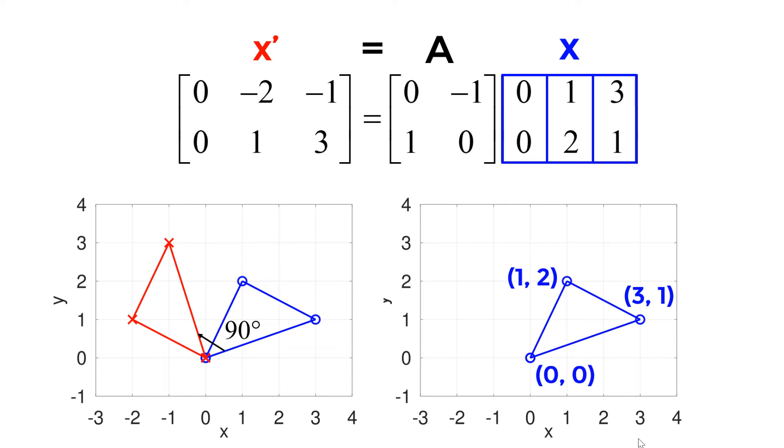If you want to rotate 90 degrees in the counter-clockwise direction, you can simply plug 90 degrees into theta and your transformation matrix A becomes [0, -1; 1, 0].